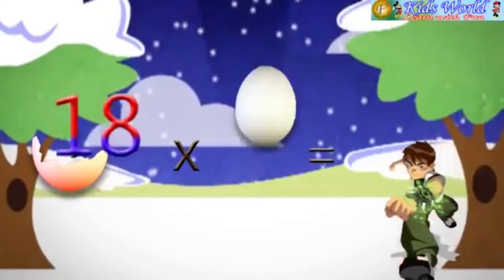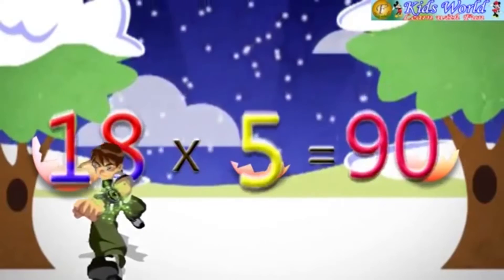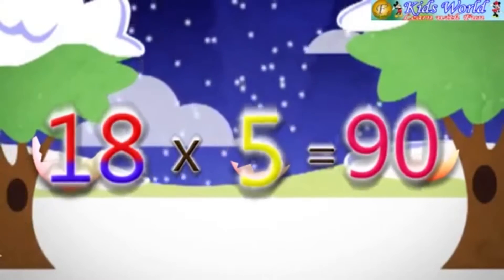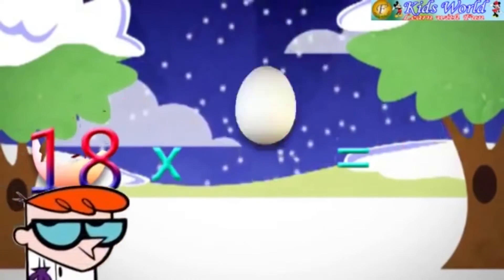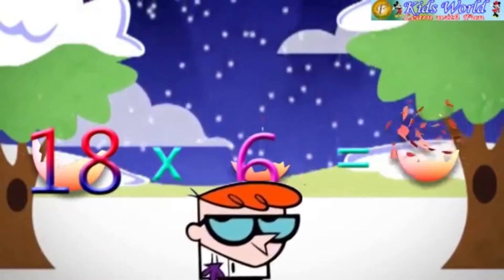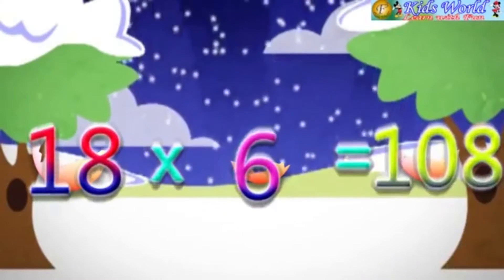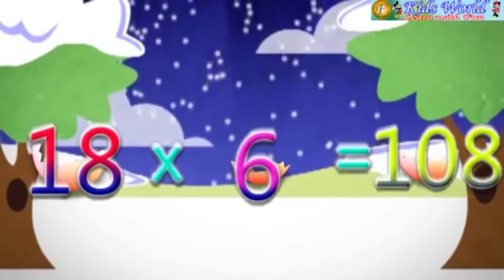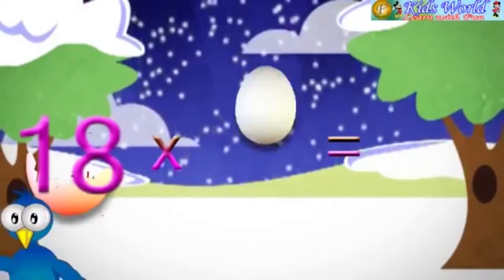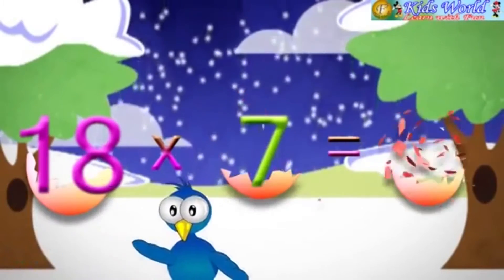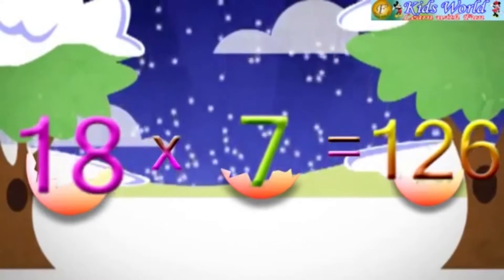18 into 5 is equal to 90. 18 into 6 is equal to 108. 18 into 7 is equal to 126.